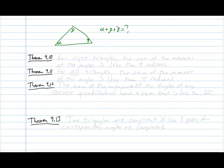But theorem 9.10 actually says that for right triangles, the sum of the measures of the angles is strictly less than π radians. So now, all of a sudden, triangles no longer have angles that add up to 180 degrees. So, theorem 9.10 says that that's true for right triangles.